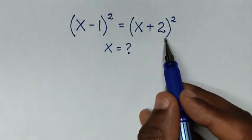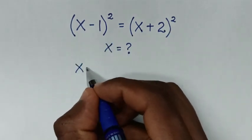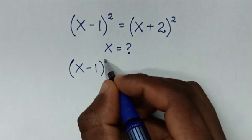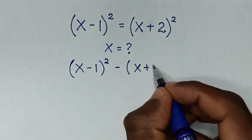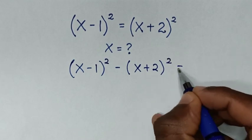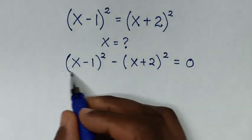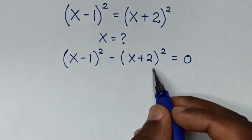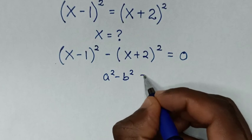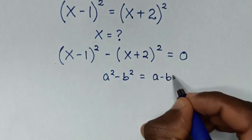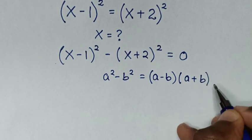We take (x plus 2) squared to the left side. So it will be (x minus 1) squared minus (x plus 2) squared is equal to 0. This is in the form of a perfect square difference, so we apply the rule: a squared minus b squared equals (a minus b)(a plus b).